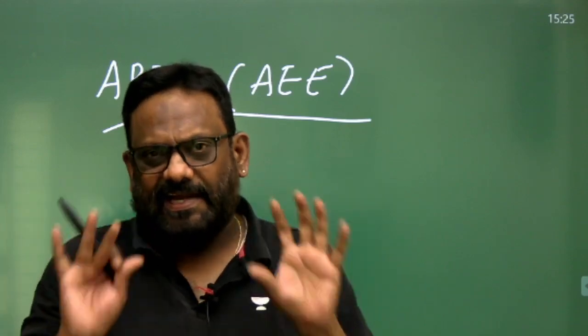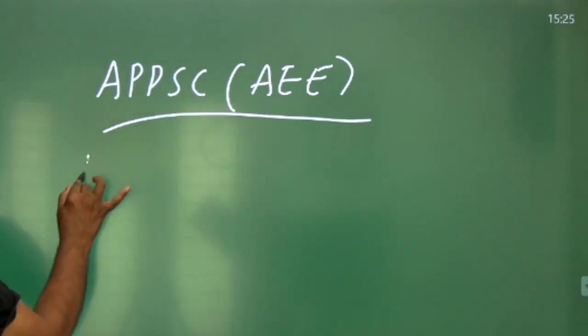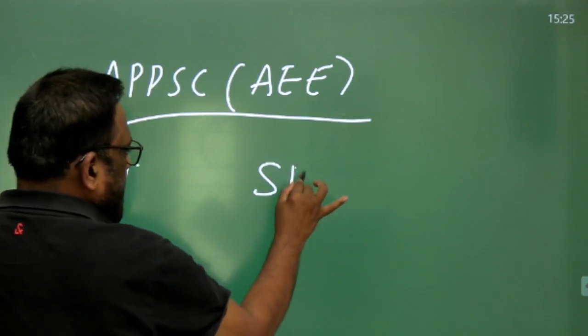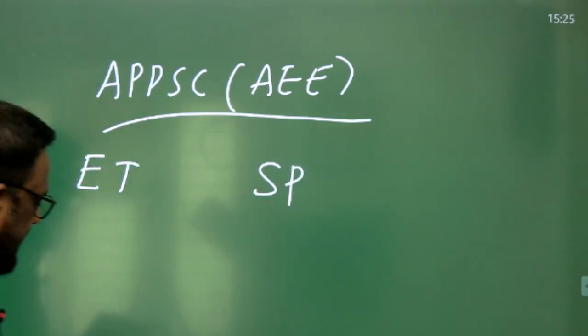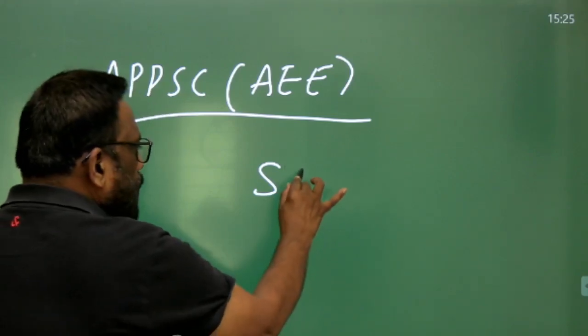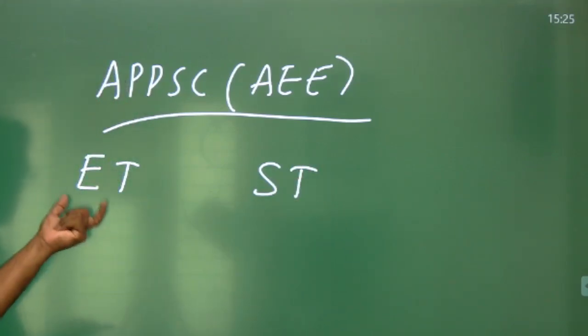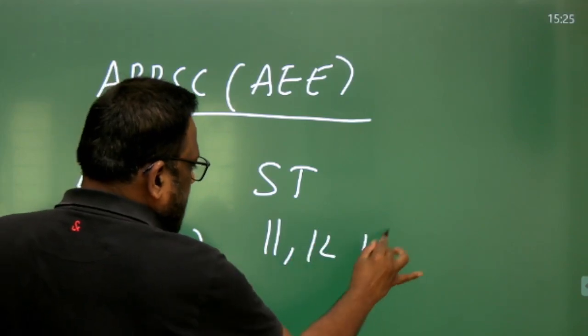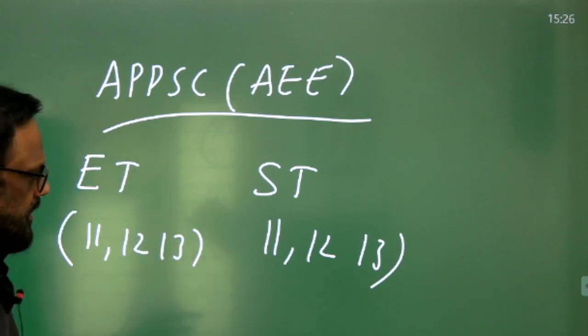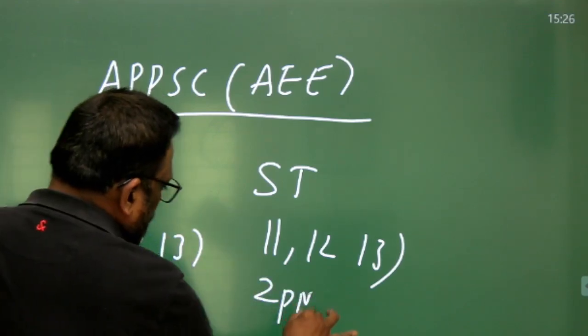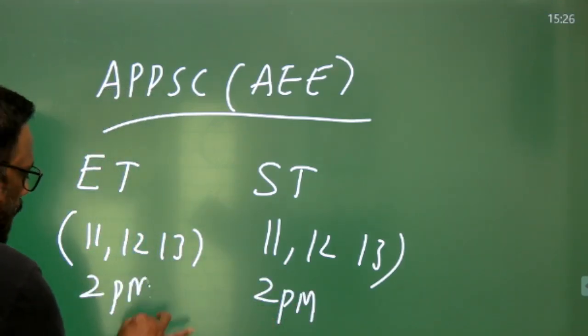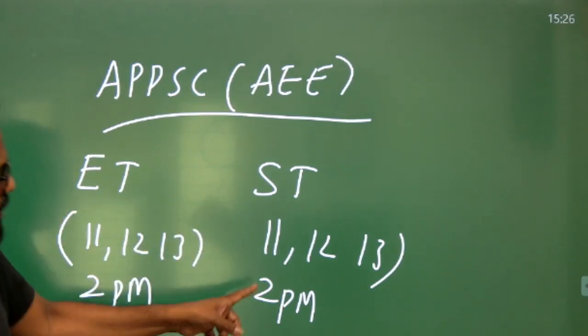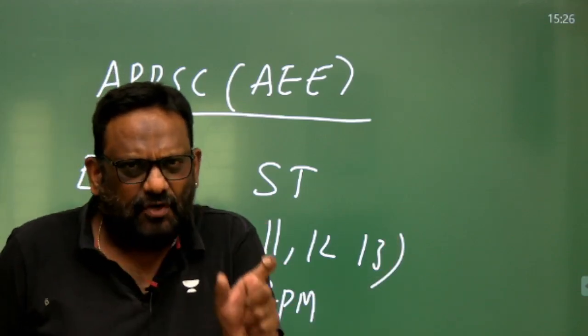So I was cross-checking the dates of engineer's trainee and supervisor trainee. BHEL has conducted, is conducting, in fact, two exams. One is engineer's trainee and supervisor trainee. So dates were also same, 11th, 12th, 13th. I think the time was also same, 2 pm. If I am not wrong, this is 2 pm to 4.30. This is 2 to 4. So examination was for four hours.